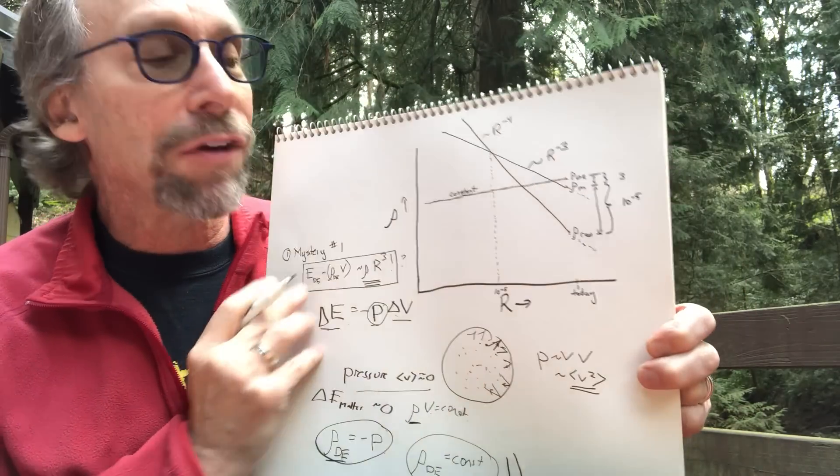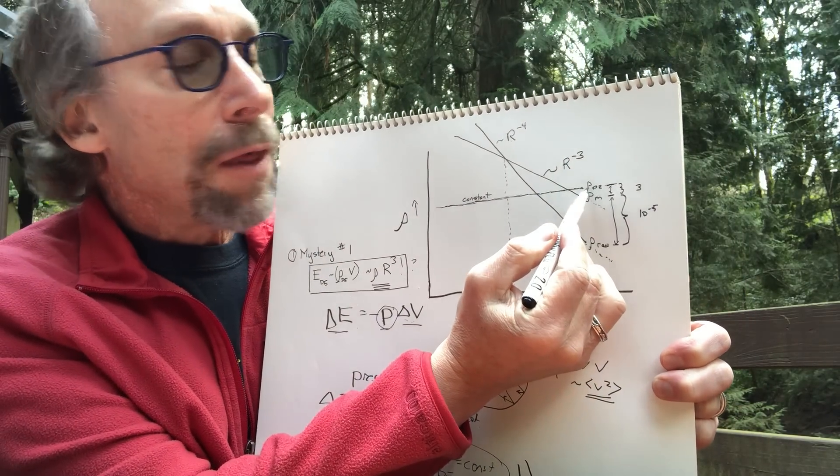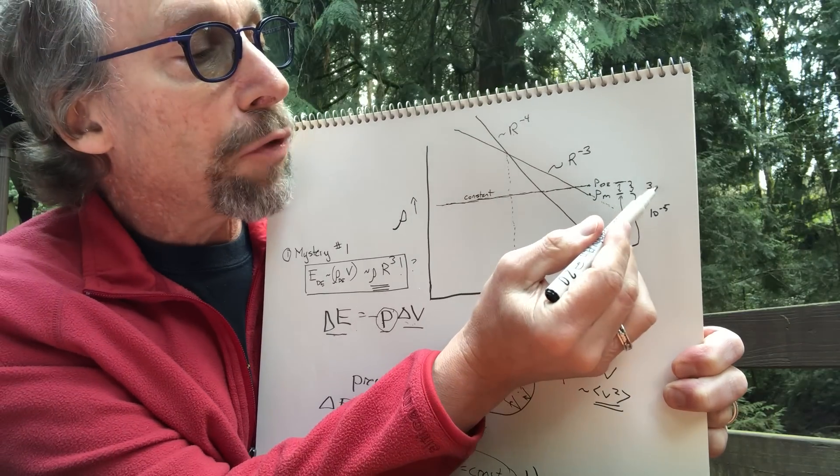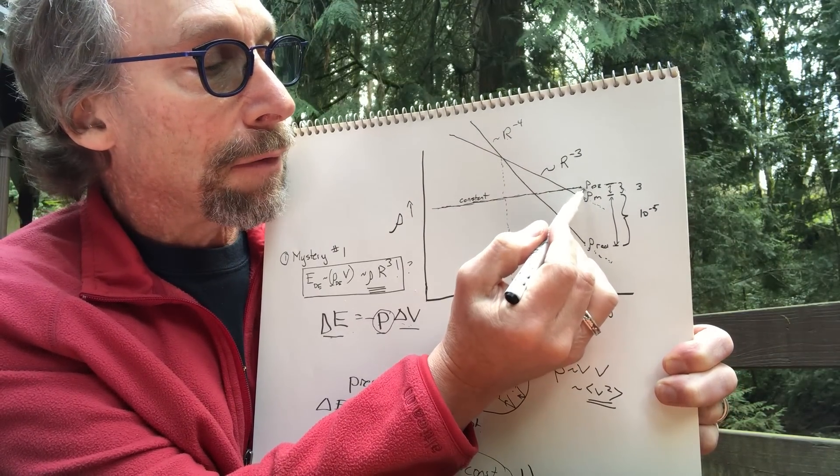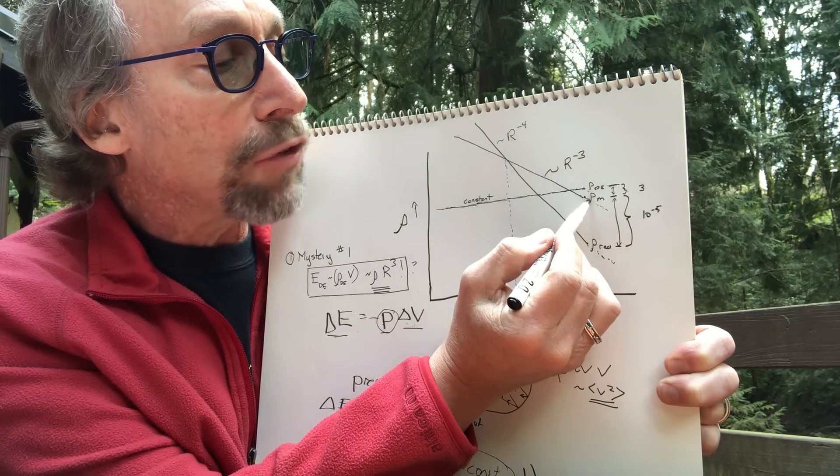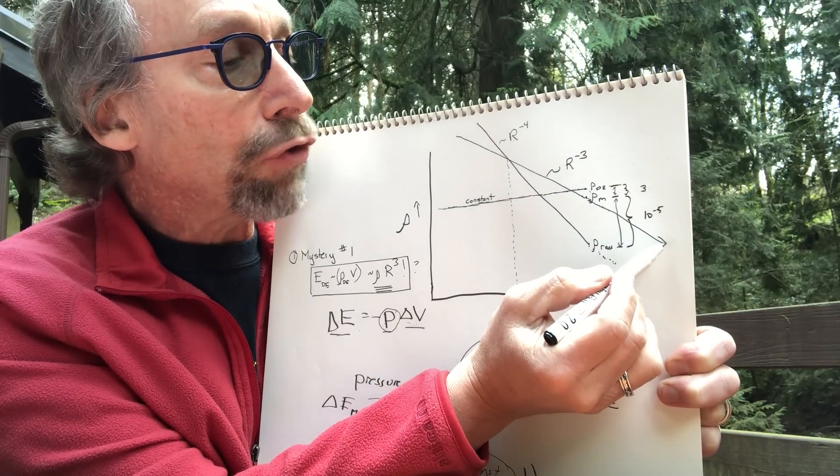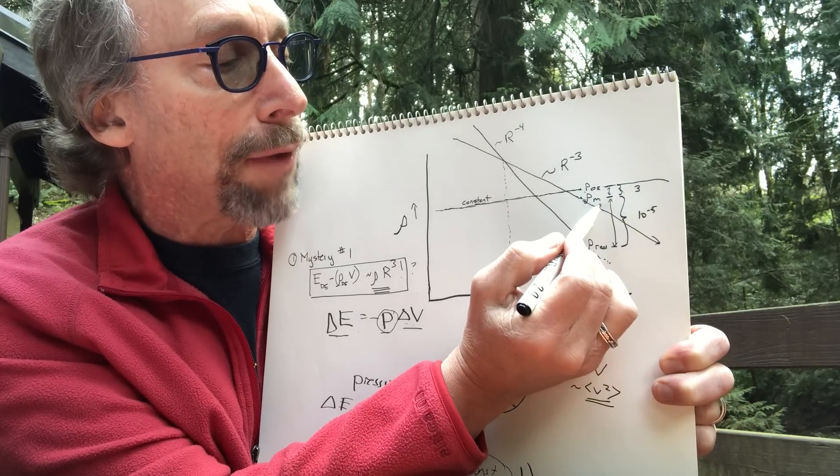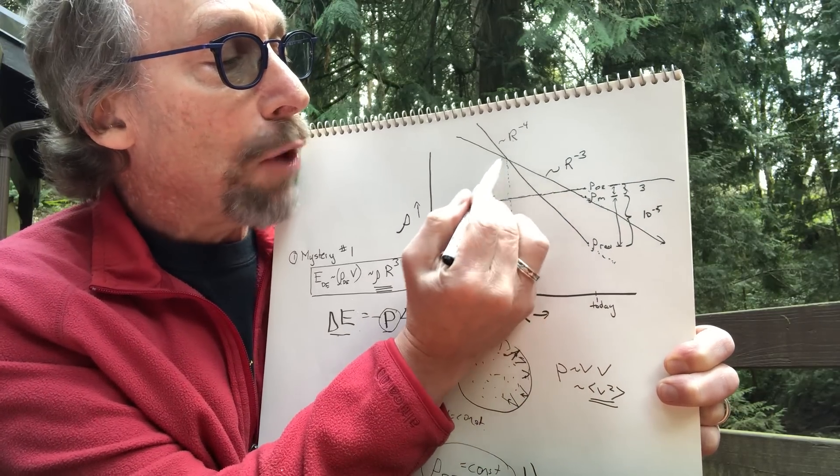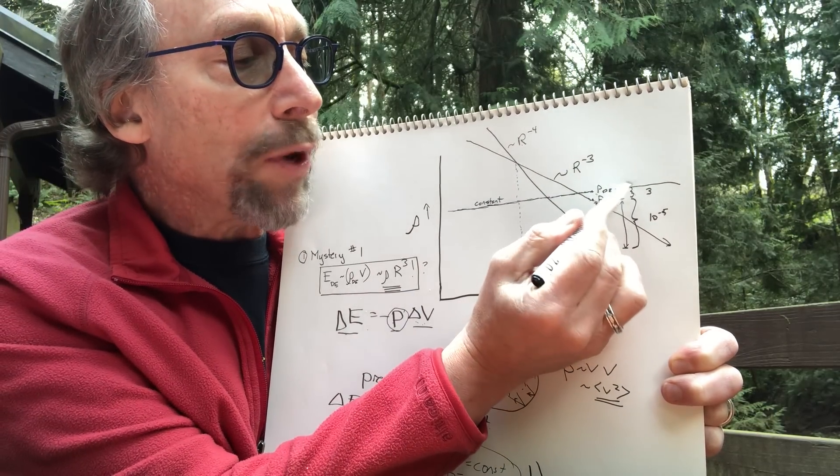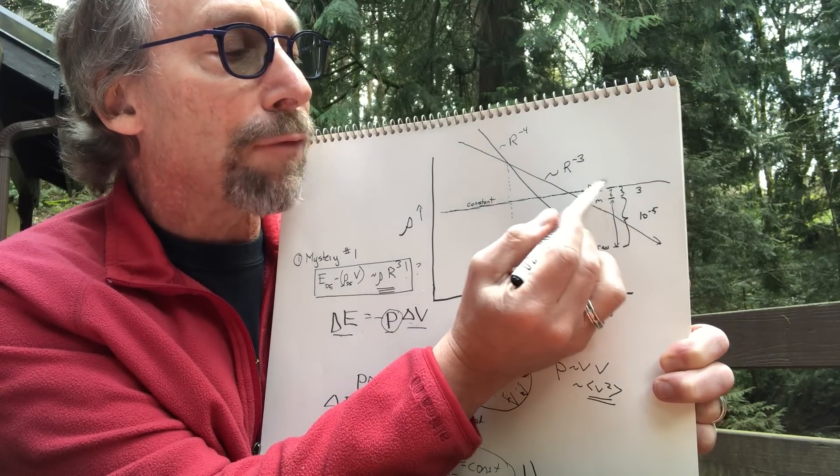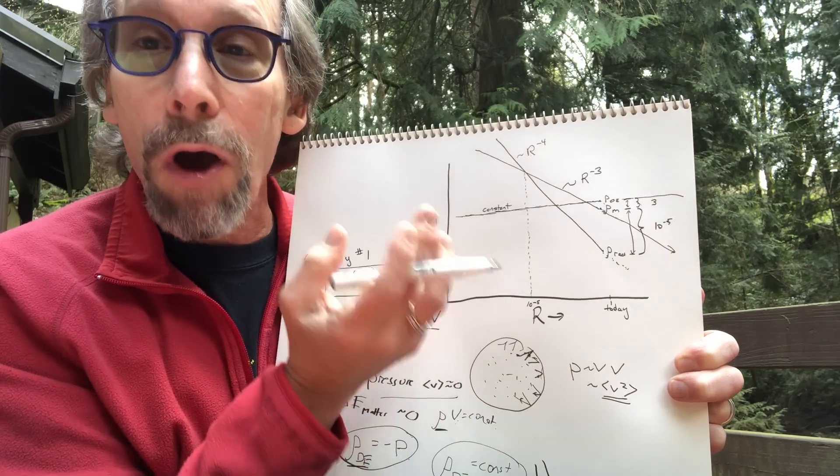But there's another mystery that I didn't mention yesterday. If you look at this, the energy of empty space is within a factor of three of the energy of matter today. But that's the only time in the history of the universe. In the far future, the energy density of matter will be much less than the energy density of empty space. In the past, it was far greater. The mystery is, why are we living at this random time in the history of the universe when those two numbers are almost the same?